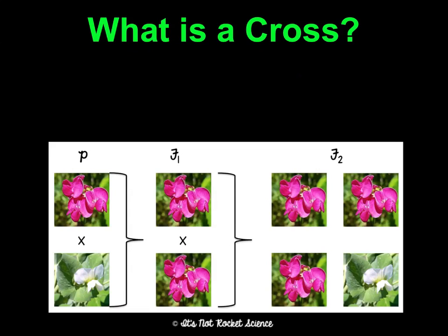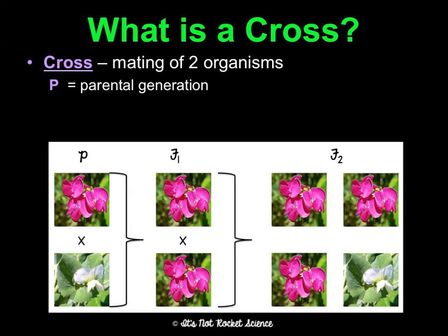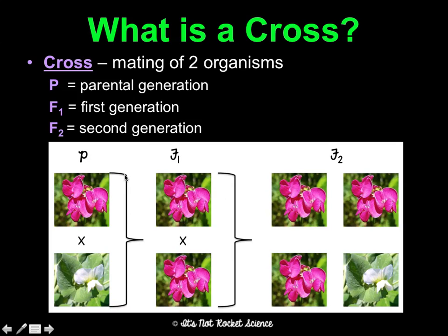Here's what he found. He did crosses, which is mating two organisms. P stands for parental generation, the first generation. F1 is the first generation of offspring. F2 would be if you crossed some F1 offspring and made more offspring from them. In the parental generation, he crossed purebred purple with purebred white, and he got all purple. Then he crossed two of these F1 purple flowers, and he got 75% purple and 25% white. He did this hundreds and hundreds of times, and consistently used these results to formulate his laws.